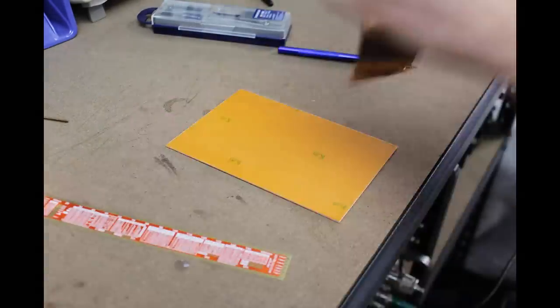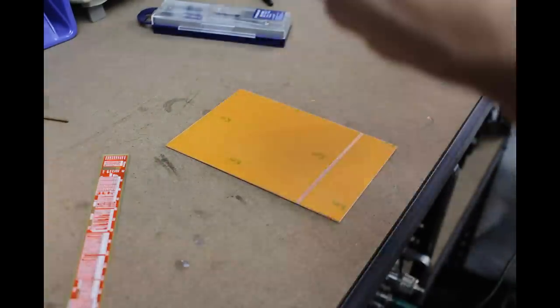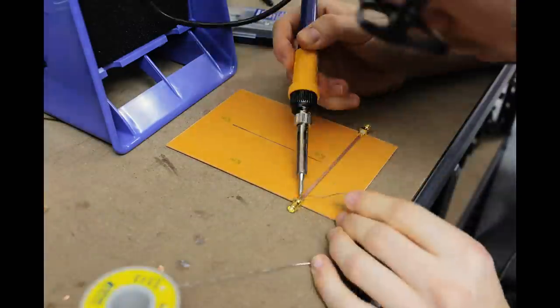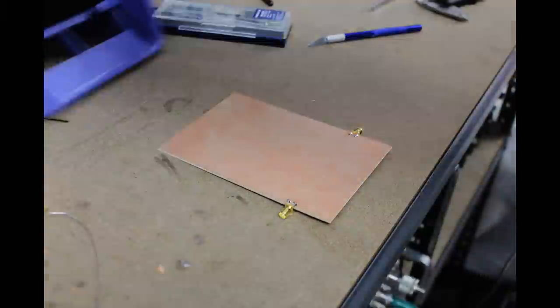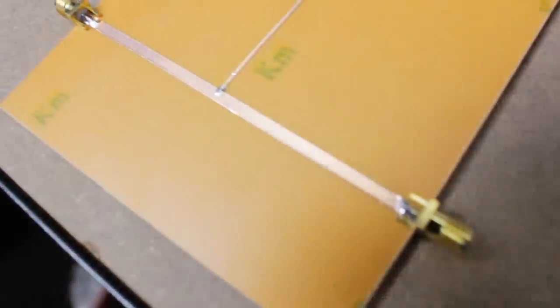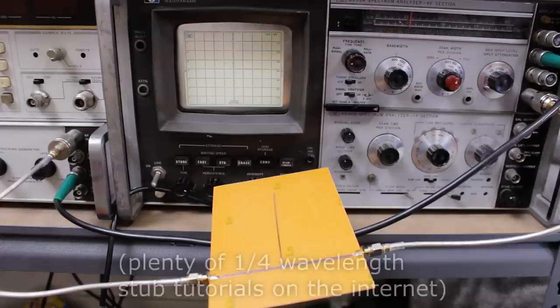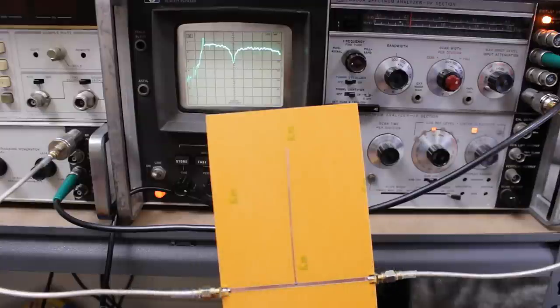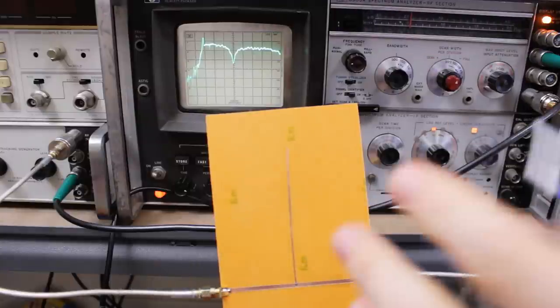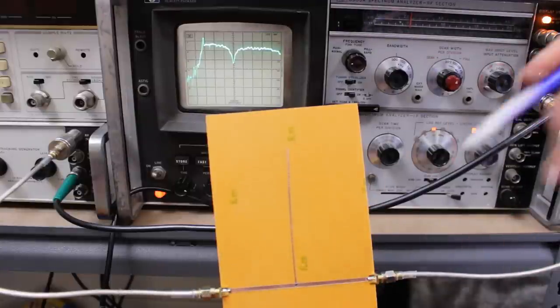Before we move on to some of the more complicated filters, I want to show you first something really simple. What I'm building is a quarter wave bandstop filter. Nothing too complicated going on. I'll actually go through how I got the measurements for the different parts later on in the video. I just want to give you a quick real-time demo of how easy it is to just change tape up and move stuff around just using this.